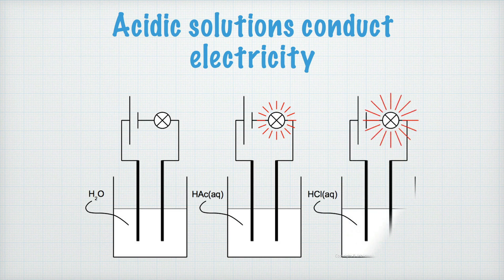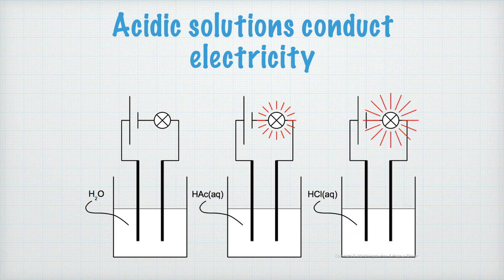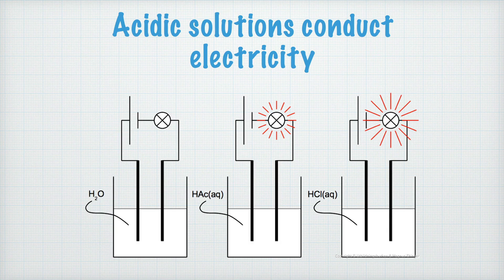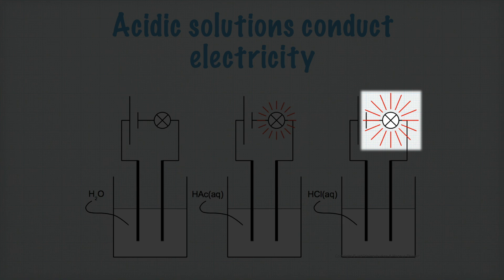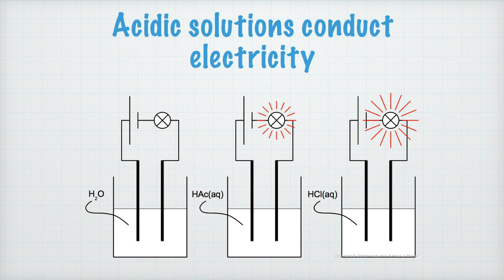In the third beaker, there's hydrochloric acid, which we can write HClAq. It too will conduct electricity, but better so than acetic acid. This is because hydrochloric acid is a strong acid. But what that means, I'll tell you in a later video.